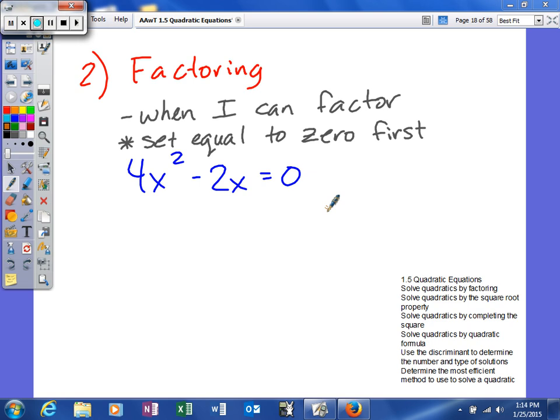So usually with factoring what's going to happen is you're not going to be able to solve for X. I can't solve this problem for X because I have multiple variables and they're of different degrees so I can't add them together. That basically eliminates that first option because I have more than one variable. In factoring I usually factor when I can factor. It's usually an easy method for me to use to solve a quadratic.